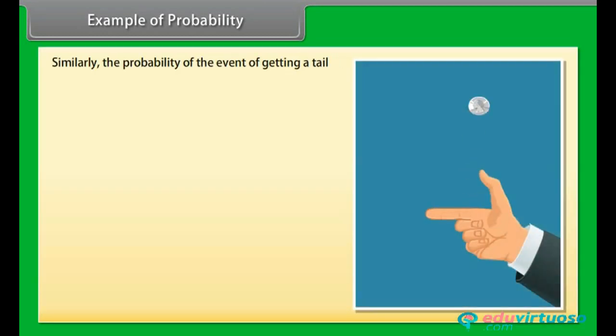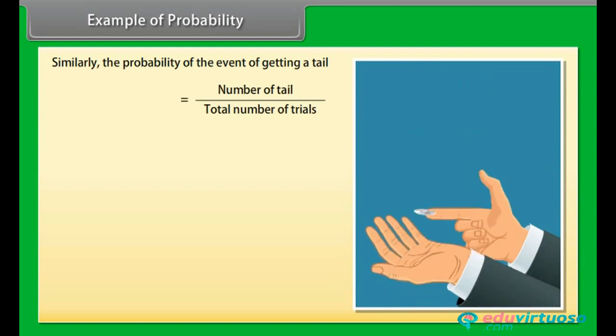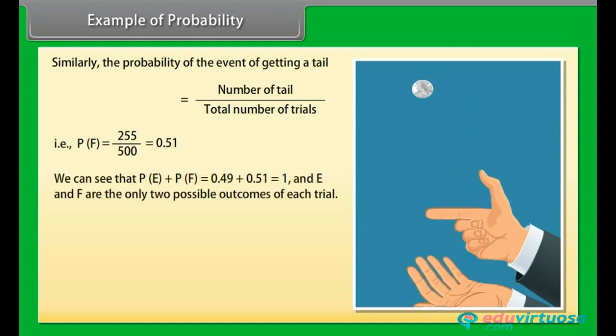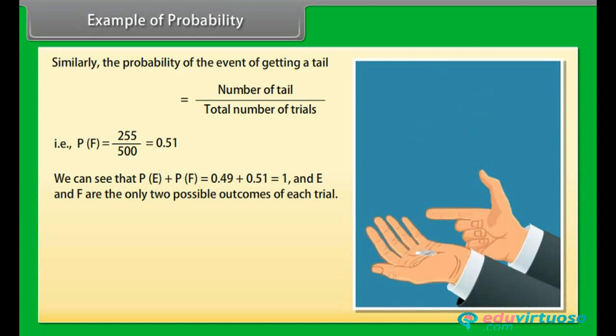Similarly, the probability of the event of getting a tail is equal to number of tails upon total number of trials. That is, P(F) equals 255 upon 500, equals 0.51. We can see that P(E) plus P(F) equals 0.49 plus 0.51 equals 1. And E and F are the only two possible outcomes of each trial.